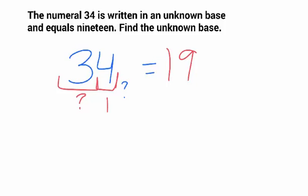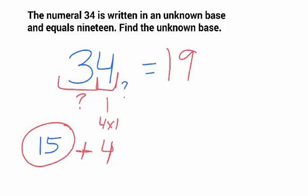If it's equal to 19, I know that that 4 is in the 1s column, so 4 times 1, that 4 is worth 4. So, how much more do I need in order to make this number add up to be 19 like it's supposed to? Well, 4 plus what is equal to 19? 4 plus 15 is equal to 19.